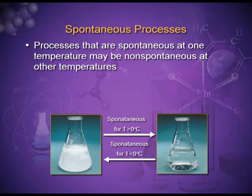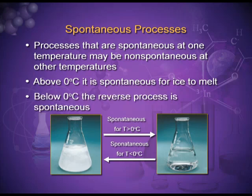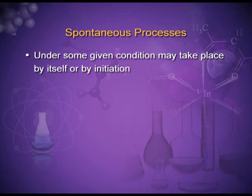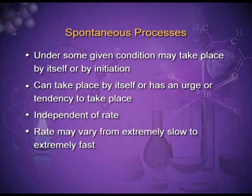Processes that are spontaneous at one temperature may be non-spontaneous at other temperatures. For example, above zero degrees Celsius it is spontaneous for ice to melt, and below zero degrees Celsius it is spontaneous for water to freeze. Spontaneous processes may take place by themselves or with prior initiation. They are independent of rate, and the rate may vary from extremely slow to extremely fast.